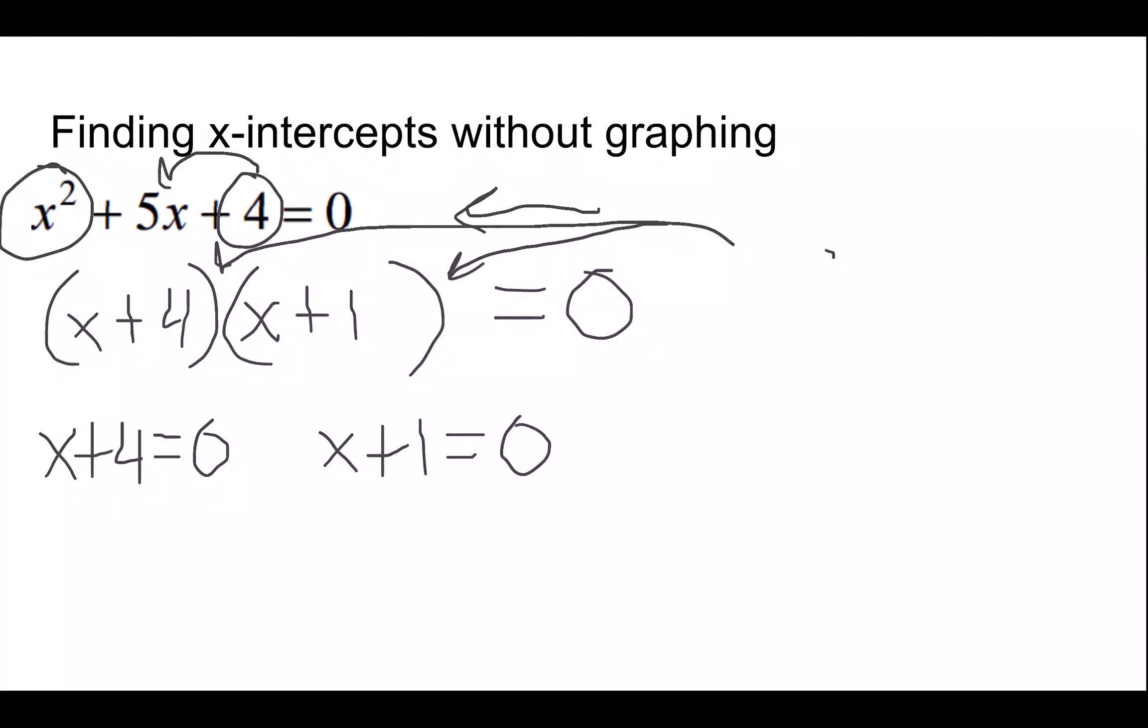And then we go through and solve. So x must be negative 4 or x must be negative 1. And that would be my 2 x-intercepts.